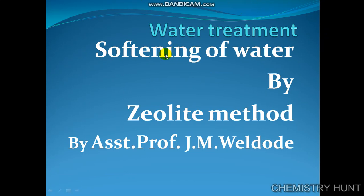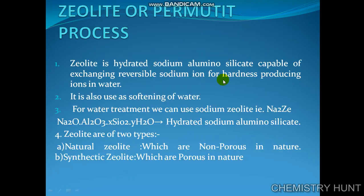Good morning friends. Today I am going to tell you about the softening of water by the zeolite method. Zeolite is also called the permutit process. The principle of zeolite is that it is a hydrated sodium aluminosilicate capable of exchanging reversibly sodium ions for hardness-producing ions in water. It is also used for softening of water.